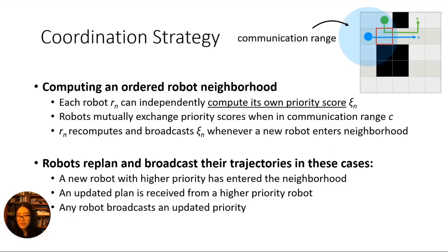As robots move around and priorities change, they'll need to re-plan their paths accordingly. There are three cases where this needs to happen, but the key point is that we always need to know who is higher priority than us and whether we are avoiding their latest plan.